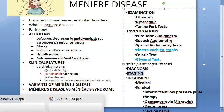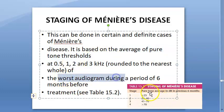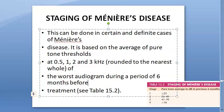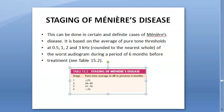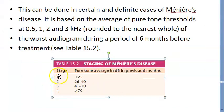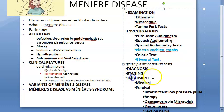Staging of Meniere's disease is based on the pure tone average from the worst audiogram during a six-month period. Stage 1 is a pure tone average of less than 25 dB, while Stage 4 is greater than 40 dB. The most severe stage would correspond to a pure tone average greater than 70 dB.